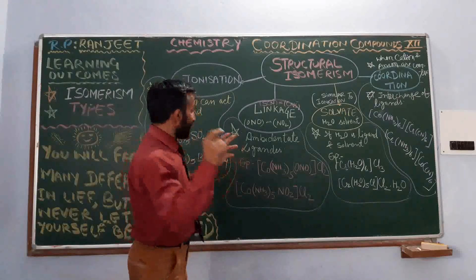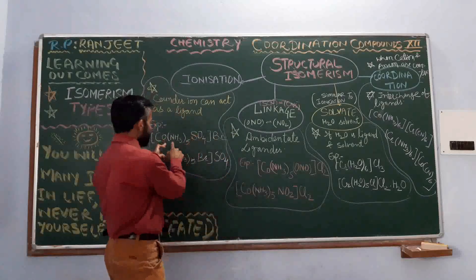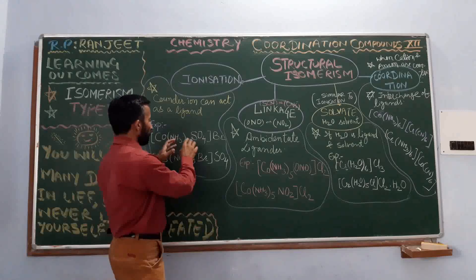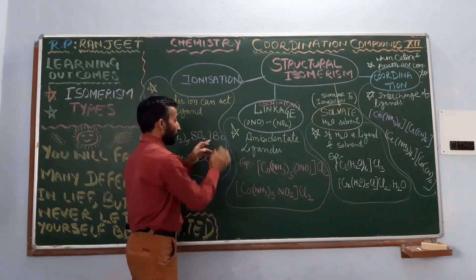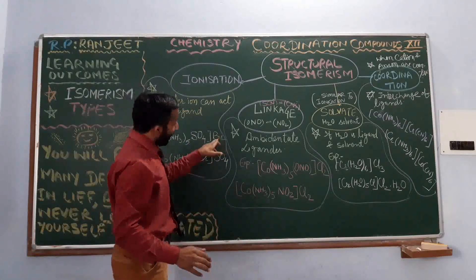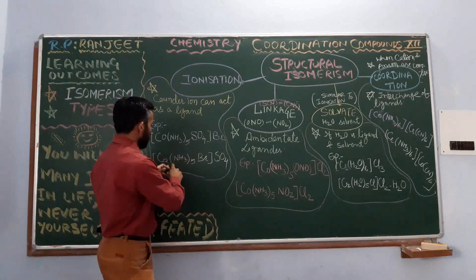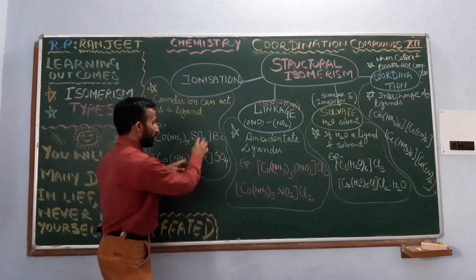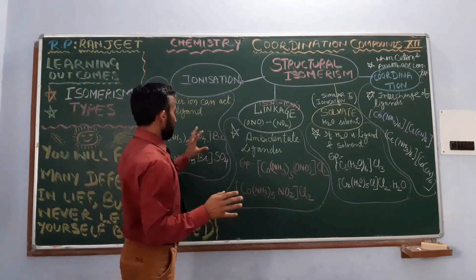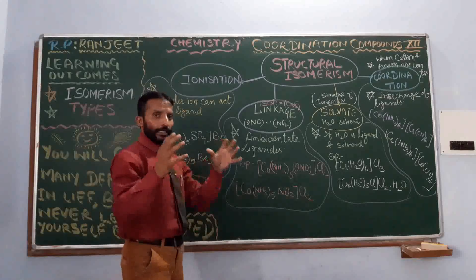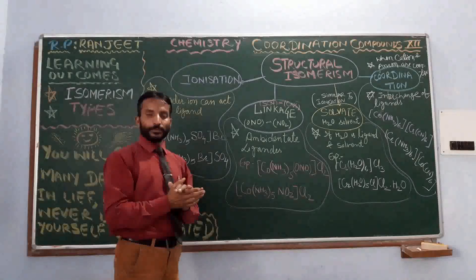Or if a ligand can act as a counter ion, then ionization isomerism is possible. In this example, amines are inside as a ligand and sulphate ion is outside. Bromide is outside but bromide can act as a ligand also. So in the isomer, we write bromide inside and sulphate outside. It is only possible if the ligand can act as a counter ion and the counter ion can act as a ligand in the coordination compound. This is ionization isomerism.